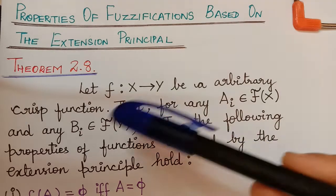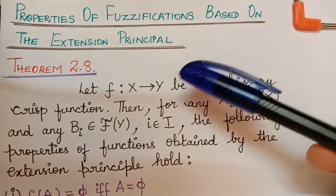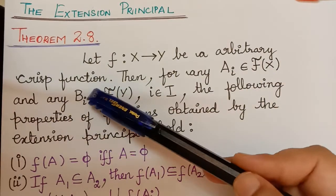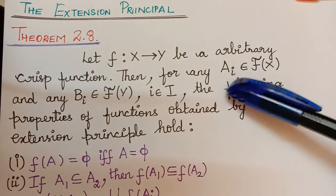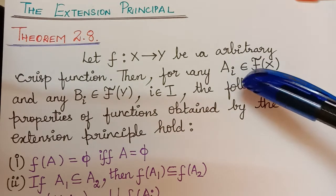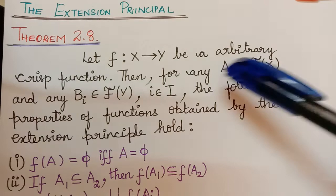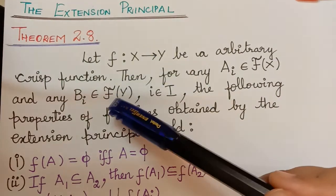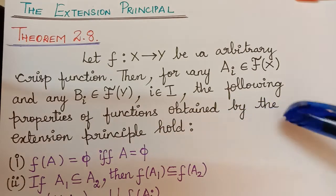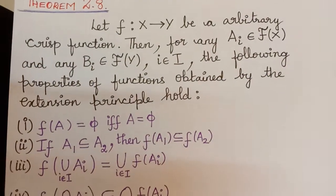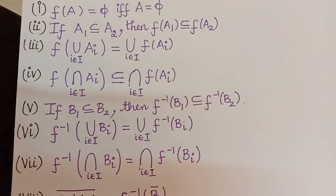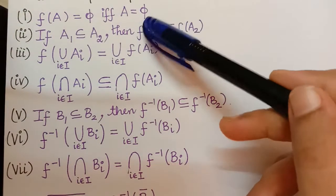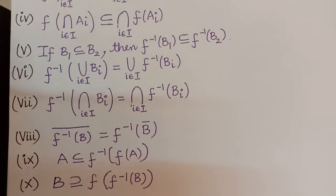Hello students. We shall now learn the properties of fuzzifications based on the extension principle theorem. Let f be a function from X to Y, an arbitrary crisp function. Then for any fuzzy set Ai, where i is an index element of capital I, which is an element of the set of all fuzzy sets under universal set X, and any fuzzy set Bi which is an element of the set of all fuzzy sets under universal set Y, the following properties of functions obtained by the extension principle hold. There are 10 properties listed here, and we shall prove these properties one by one.